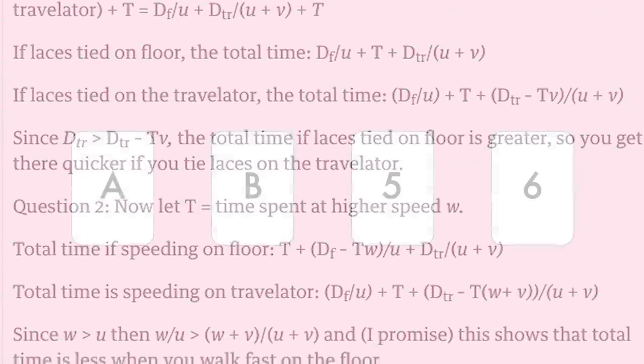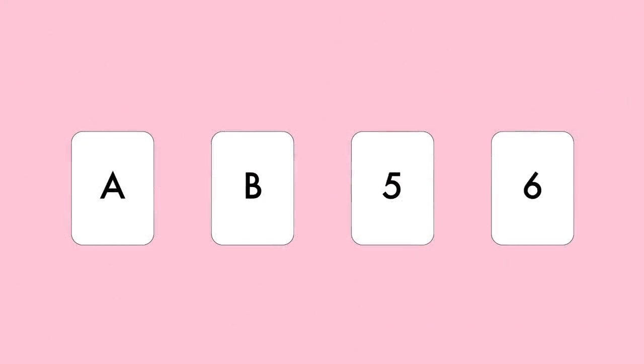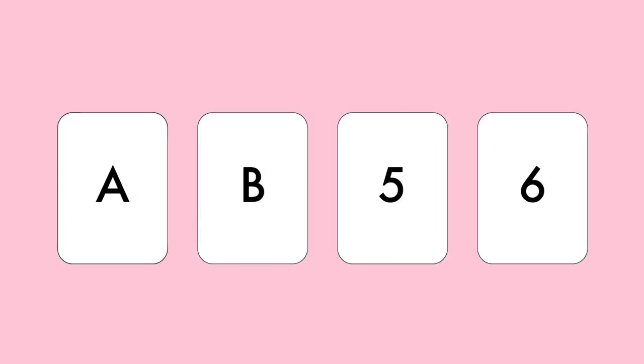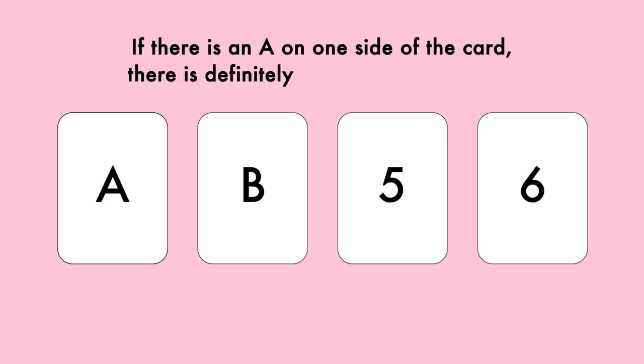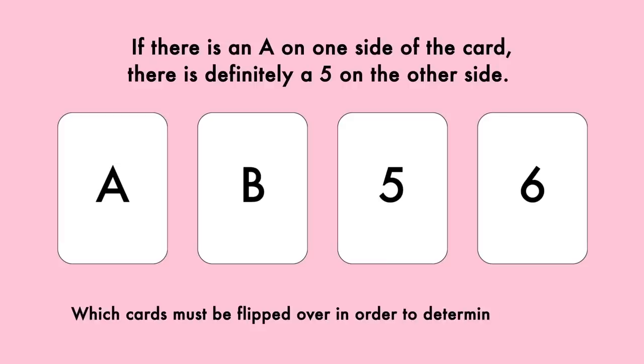Now let's switch gears to a purely logical problem. Let's say there are 4 cards on the table labeled A, B, 5, and 6. Then I tell you if there's an A on one side of the card, there's definitely a 5 on the other side. The question is which cards must you flip over in order to determine whether I'm telling the truth.